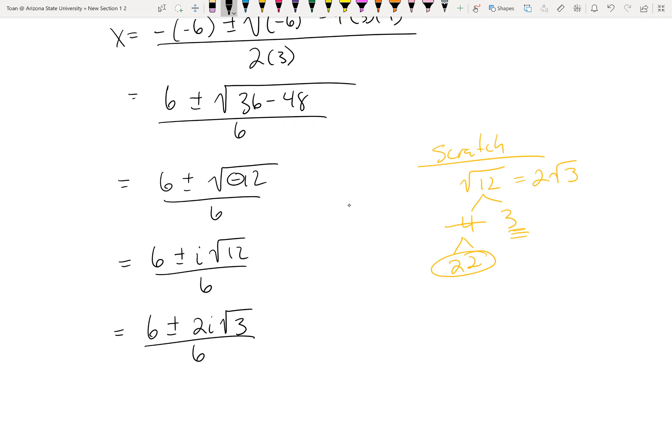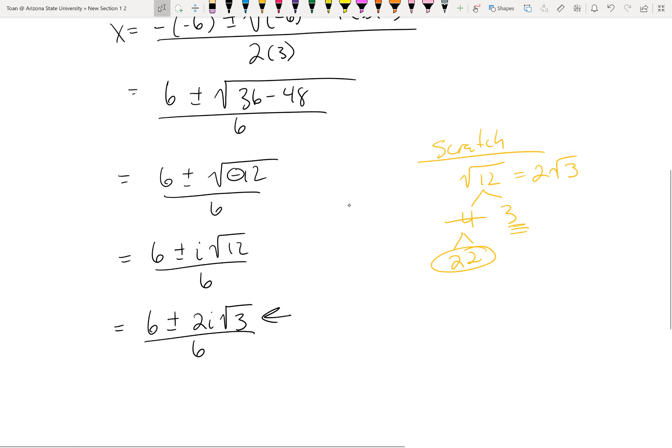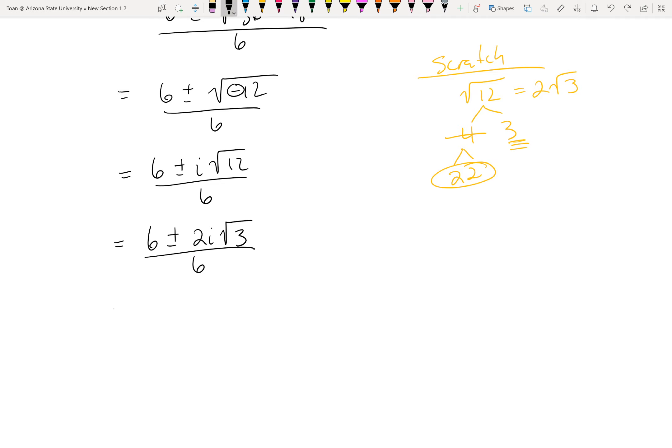Now usually when you simplify a fraction like this that has multiple pieces on top and a single number on the bottom, in order to simplify a fraction you have to look at all the outside numbers. Don't look at the inside numbers. Just look at the outside numbers. And then you ask yourself, is there a common number you can divide out from all of them? You can see that you can divide out a 2 from all of them. So we'll divide everything by 2. And when we divide everything by 2, we get our final answer: 3 ± i√3 over 3.